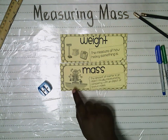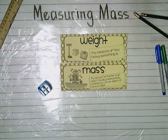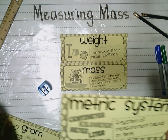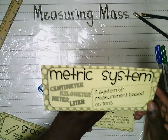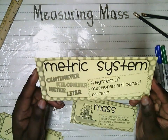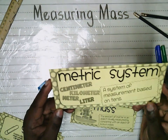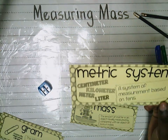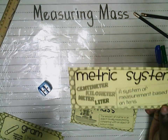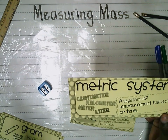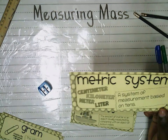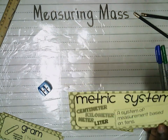You see the little girl there with a scale. In this instance, we are using the metric system. The metric system is a system of measurement based on 10. So we have a centimeter — we did that when we measured using our ruler — we didn't do kilometer as yet, meter and liter, but we're using the metric system to measure weight.